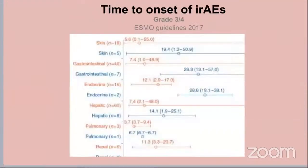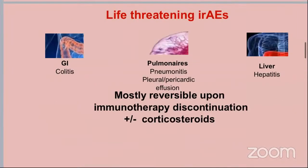The time of onset of immune-related adverse events, especially grade 3 and 4: for skin toxicity, if using combination therapy, onset is about 5 weeks; for single agent, about 19 weeks. For GI symptoms with combination nivolumab and ipilimumab, onset is about 7 weeks; single agent, about 26 weeks. For endocrine events, single agent is about 28 weeks; combination reduces to 12 weeks. The life-threatening immune-related adverse events are pneumonitis, colitis, and hepatitis, but these events are mostly reversible upon immunotherapy discontinuation, with or without corticosteroids.